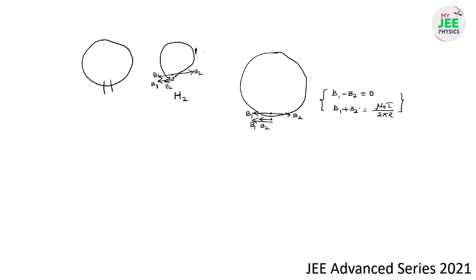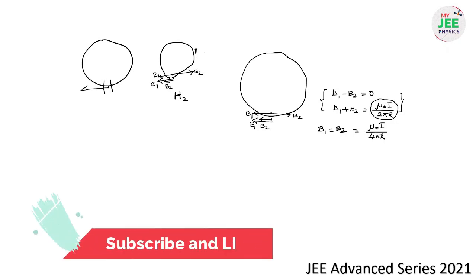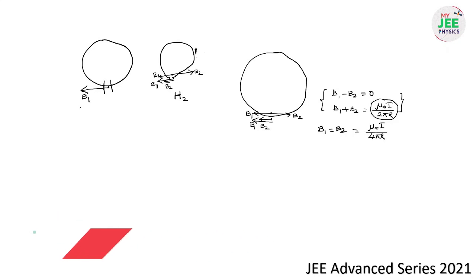So the magnetic field due to the remaining part (the first part) is B1 = μ₀I/4πR. This same logic can be applied even in electrostatics for electrostatic pressure — please let me know in the comments if you require that, and I will post another video on it. So once we know the magnetic field B1, we can go for the force value.